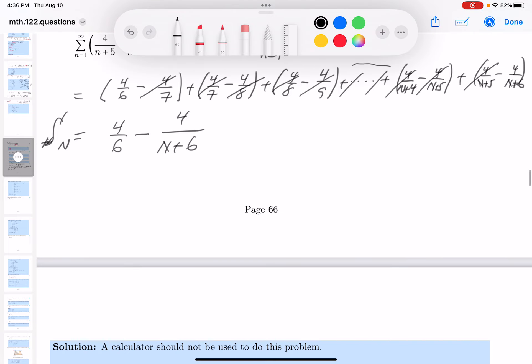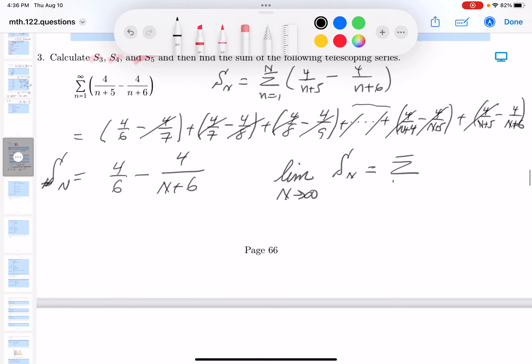What I want to do, though, is I want to take the limit as this big N goes to infinity of Sn. What's that going to equal? The sum, n equals 1, off to infinity, that's where the big N is going, of this thing.